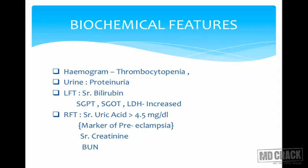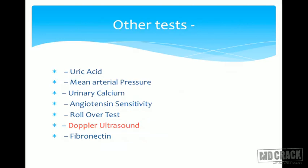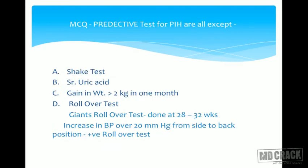Biochemical features: hemogram shows low platelets, urine shows proteinuria, LFTs show raised serum bilirubin, PT, SGOT, and LDH. In renal function tests, serum uric acid above 4.5 is a marker of preeclampsia and can be used as a screening test — pregnant ladies with high serum uric acid have higher risk of PIH later in pregnancy. Serum creatinine and BUN are also raised.